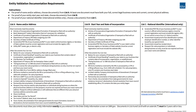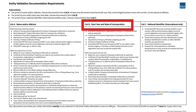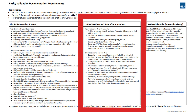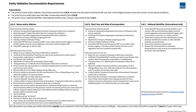The General Services Administration provides a chart that shows the specific listing of documents considered acceptable for validation. Documents must show your entity information exactly as you entered it in the Enter Entity Information screen on SAM.gov. List A verifies the name and/or address of the entity. List B collects the start year and state of incorporation of the entity. List C is a national identifier and relates to international applicants only. Documents listed in List A and List B must be five years old or less.